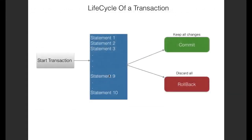Here we can see the life cycle of a transaction. A transaction is started by a START TRANSACTION command, followed by a collection of statements that forms the transaction. There is no END TRANSACTION command. The transaction is ended by either using the COMMIT command or the ROLLBACK command. COMMIT tells the database to keep all the changes made by the transaction, while ROLLBACK instructs the database to discard all those changes.